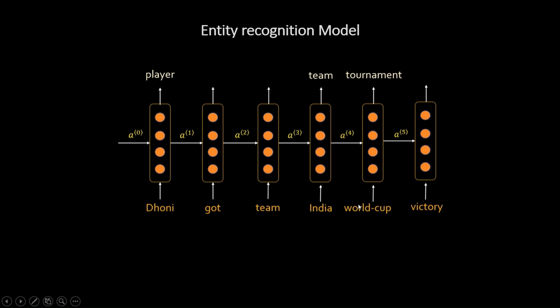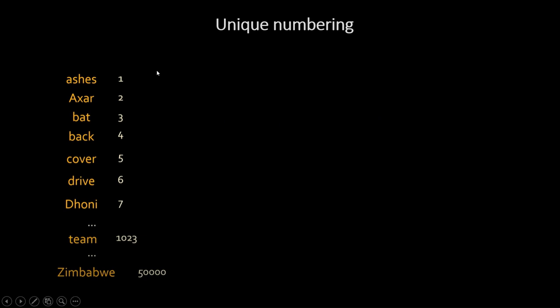While building the model to perform this task — given text like 'Dhoni got Team India World Cup victory' — you must create a model that can recognize Dhoni as a player, India as a team, and World Cup as the tournament. The task is processing this text, that is converting it into a vector. We already discussed different vectorization techniques in the last session. Let's briefly review how those apply here.